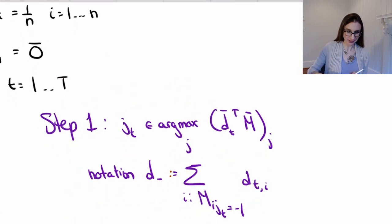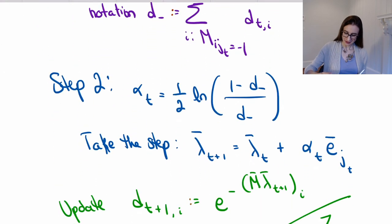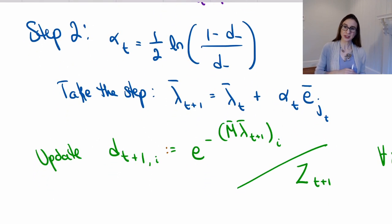The first one is that here we're choosing the best direction to travel in using this argmax, but AdaBoost uses a weak learning algorithm. And then also the weight update step looks funny. In AdaBoost you take the weight from the current iteration and you multiply the weights by either e to the alpha or e to the minus alpha depending on whether the point was misclassified or not. This doesn't look the same as that.